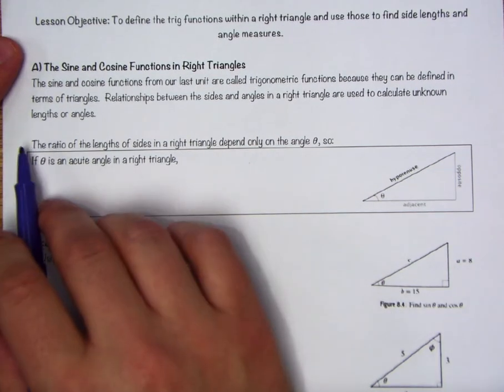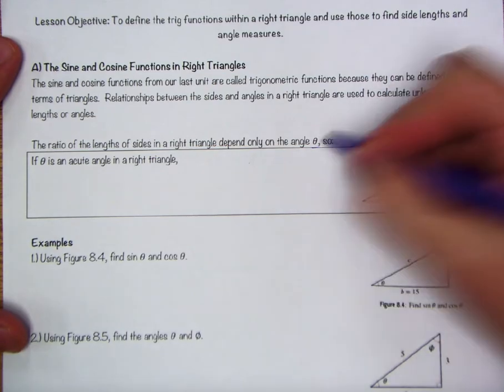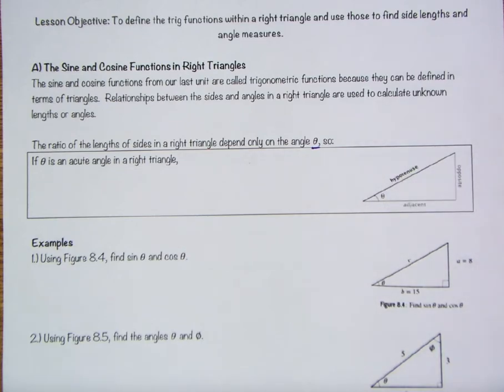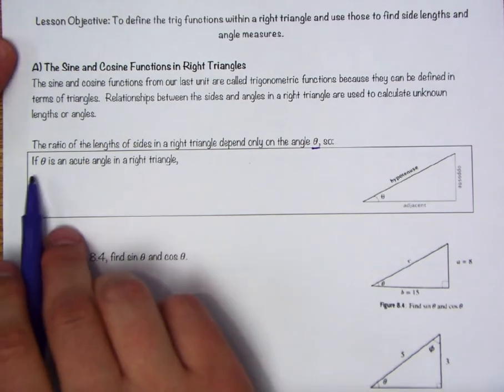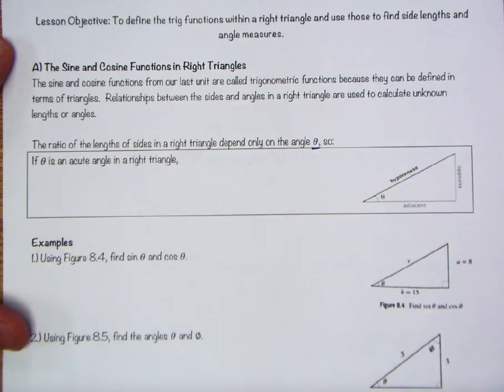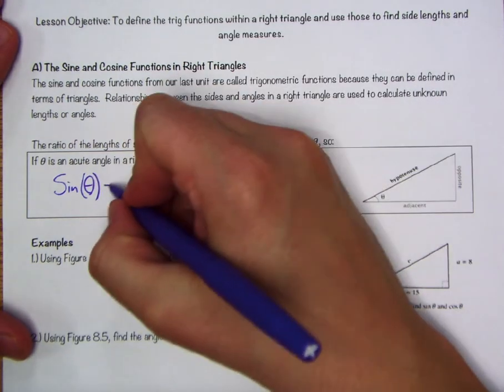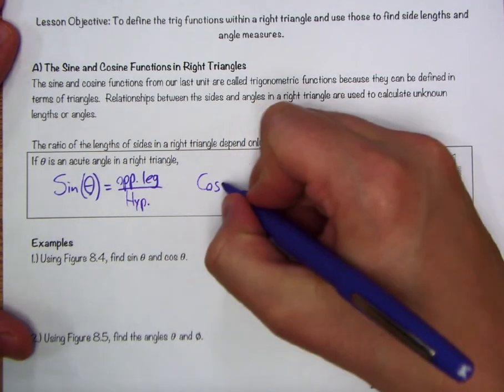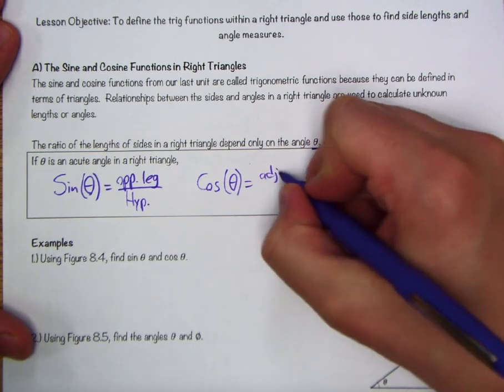It says the ratio of the lengths of sides in a right triangle depend only on the angle theta. Which we started defining as that sort of acute angle back in geometry. And only recently have we decided that that could actually be sort of any degree measure or radian value. But when dealing with right triangles, when looking at the geometry, let's think about that in terms of a positive acute angle again. So if theta is an acute angle in a right triangle, well, let's think about sine and cosine in particular.